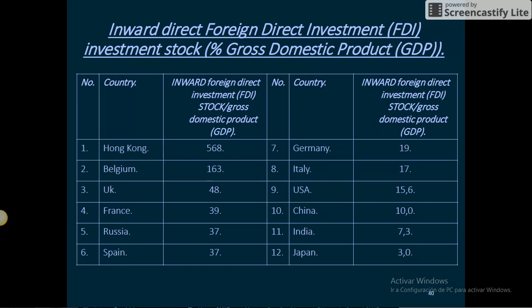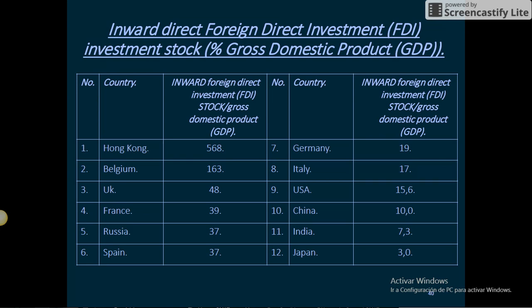Inward Foreign Direct Investment. Rank 1: Hong Kong. Rank 5: Germany — 19.2. Belgium — 16.8. Italy — 17.3. Rank 3: UK — 48.9. USA — 15.6. Rank 4: France — 39. China — 10.0.